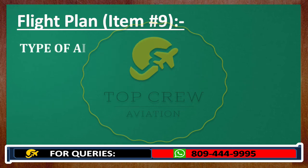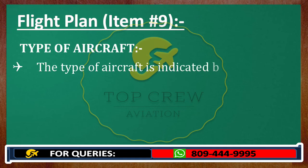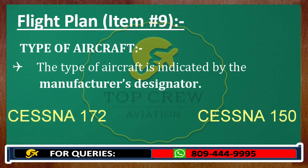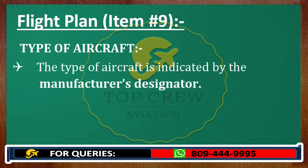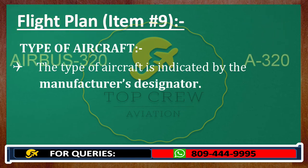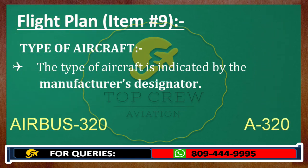The second thing is type of aircraft, which would be given by the manufacturer's designator. For example, if you fly a Cessna, you would mention Cessna 152, 172, or 150 — whatever it is. If you fly a Boeing 737, you would write B737; for Airbus, A320, A380, A330, whatever it is.